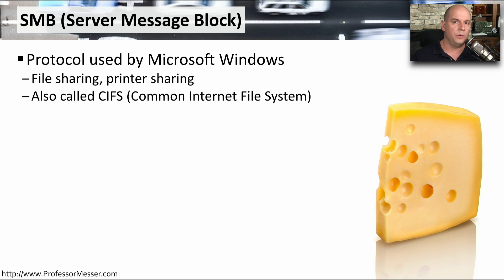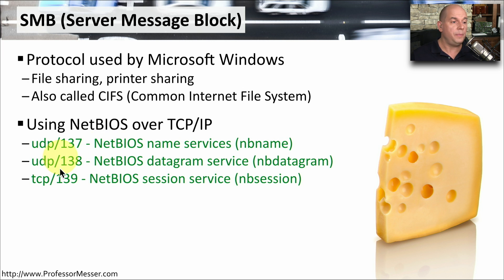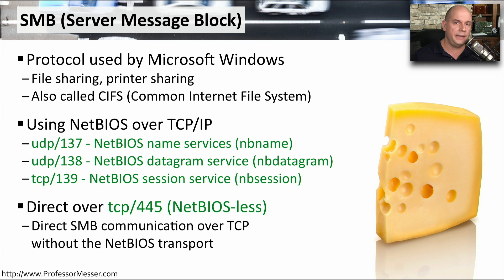A common service used on Microsoft Windows networks is SMB, or Server Message Block. If you're transferring files between Windows devices or printing to a printer on a Windows network, you're probably using SMB, also referred to as CIFS, or Common Internet File System. Older Windows versions used NetBIOS, but today we use TCP/IP. Microsoft wraps NetBIOS inside TCP/IP for compatibility, using UDP port 137 for name services, UDP port 138 for connectionless datagram communication, and TCP port 139 for SMB data transfer. Modern Windows systems can send SMB directly using TCP port 445 without needing NetBIOS.